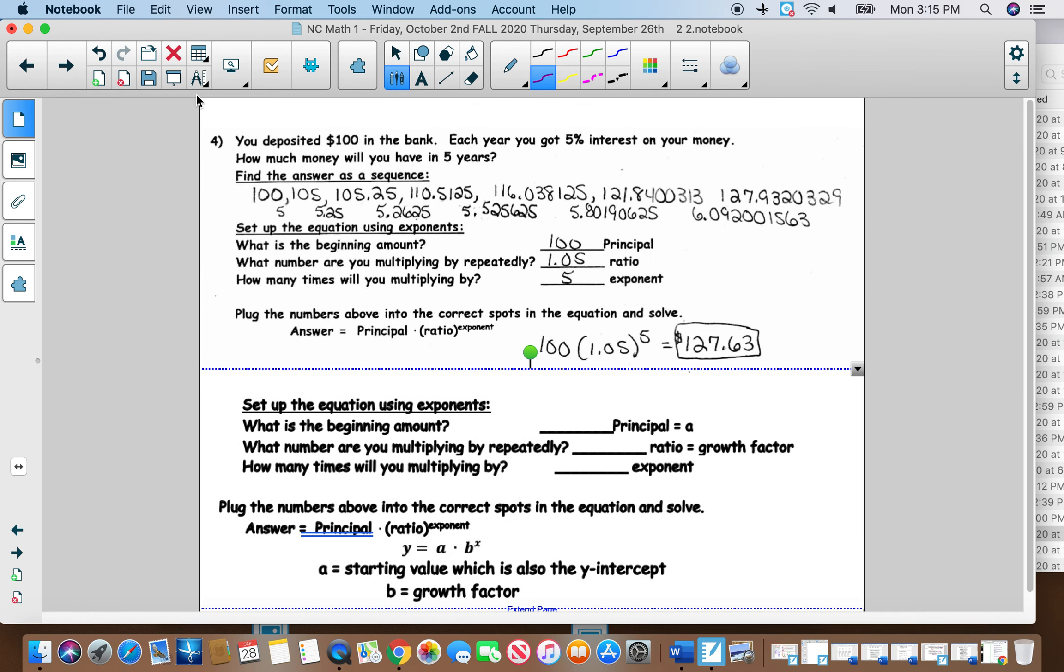And the last one, you put $100 in the bank. Each year you get 5% interest on your money. How much money will you have in five years? So the principle starting amount is $100. The growth factor, since it's increasing, you've got to make sure, and anytime you put money in the bank, you assume that it's increasing. So you get 5% interest on your money. And so that's why it's going to be 1.05. Because for it to increase, it has to be greater than 1. How many times will you multiply it? You're doing it in five years, so that would be a 5.